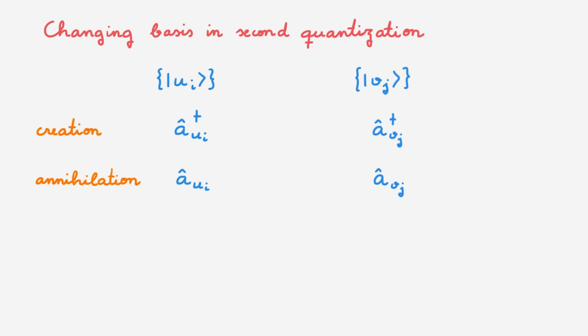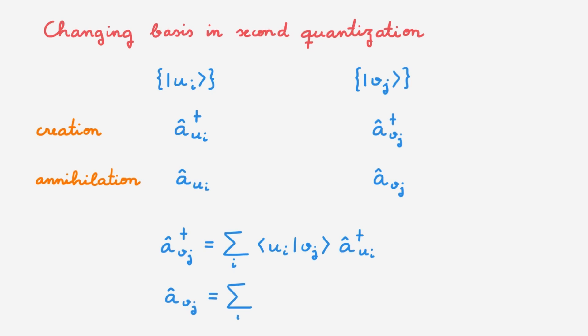What are these transformation relations? As we derive in the video on basis changes in second quantization, the creation operator in the V basis is equal to a sum over i of the bracket between the U basis states and the V basis states times the creation operator in the U basis. Similarly, the annihilation operator in the V basis equals a sum over i of the bracket between the V basis states and the U basis states times the annihilation operator in the U basis. You can find the full derivation in the video on basis changes linked in the description.